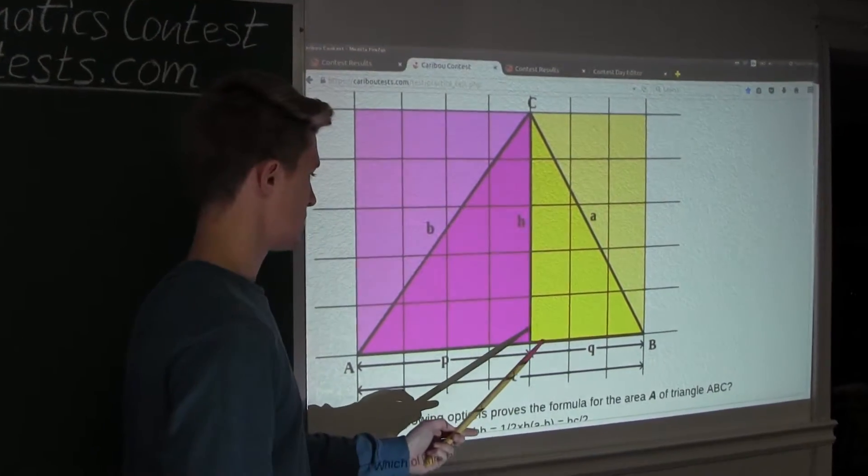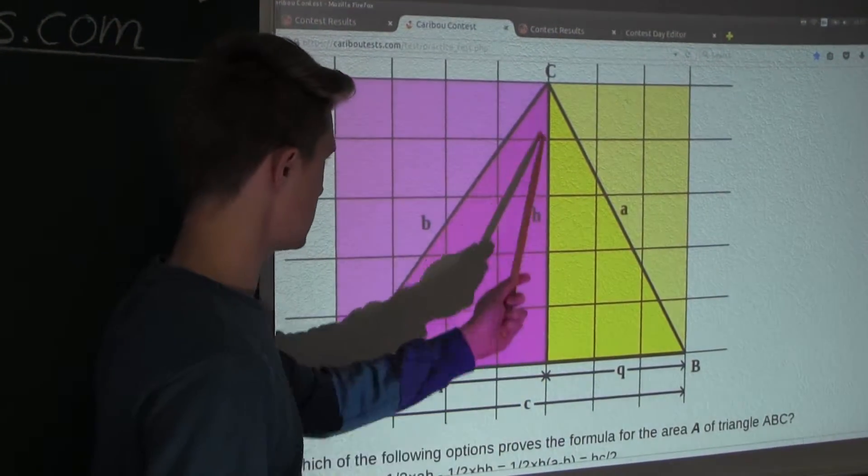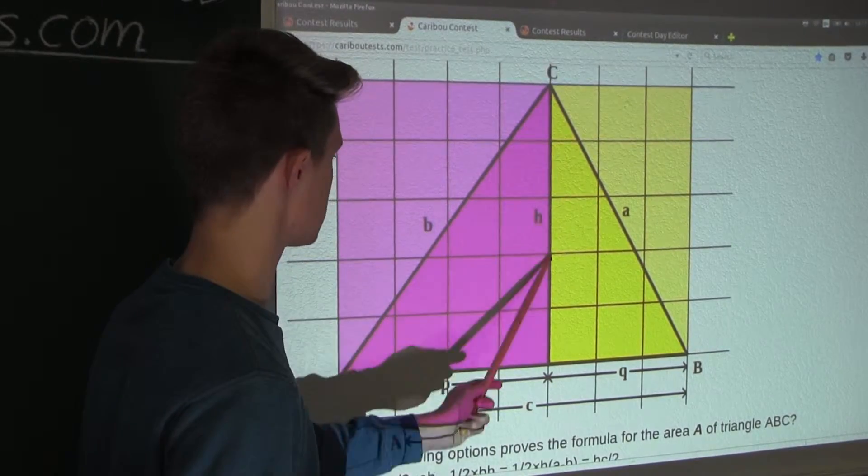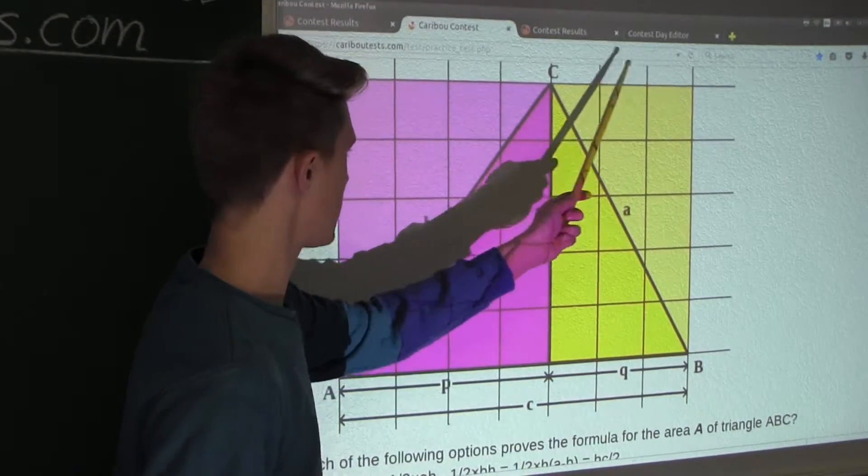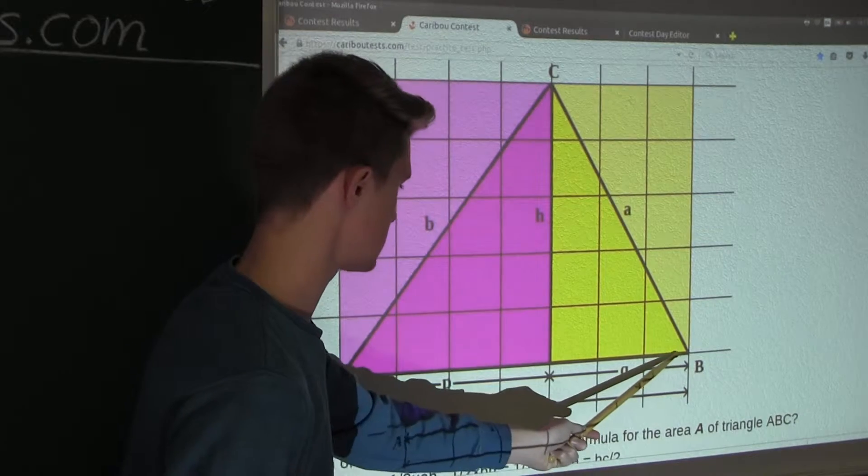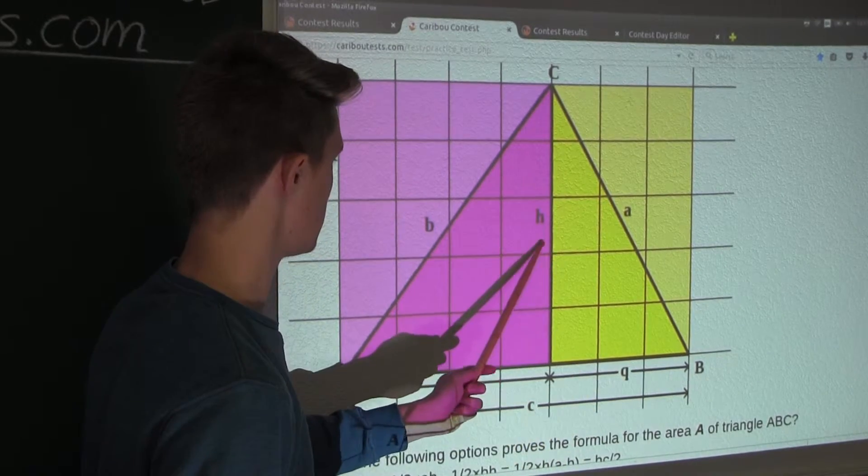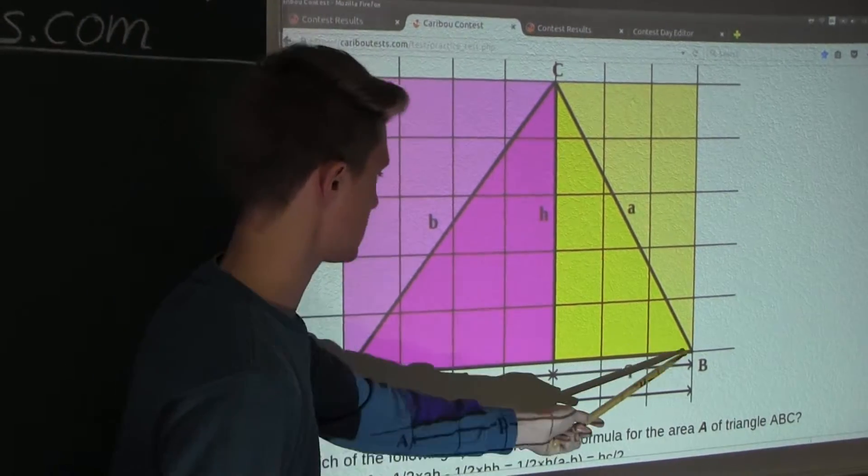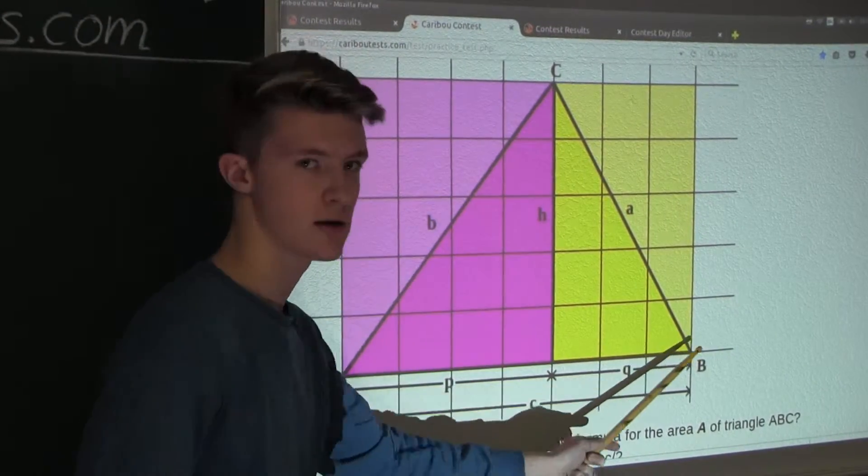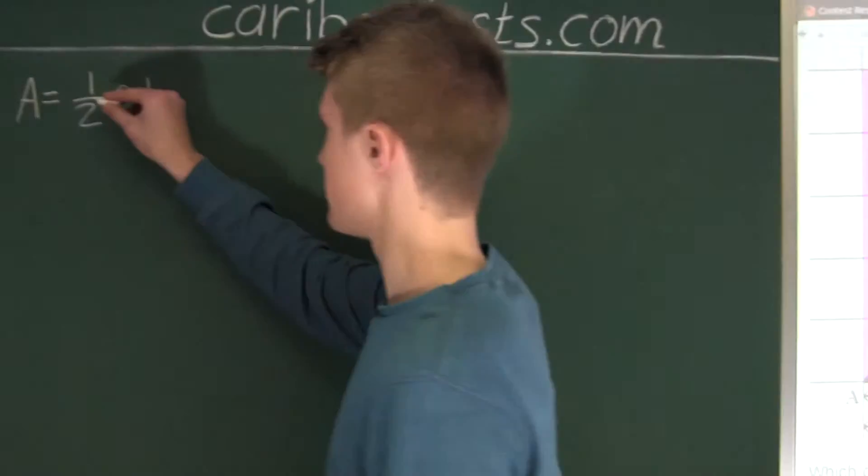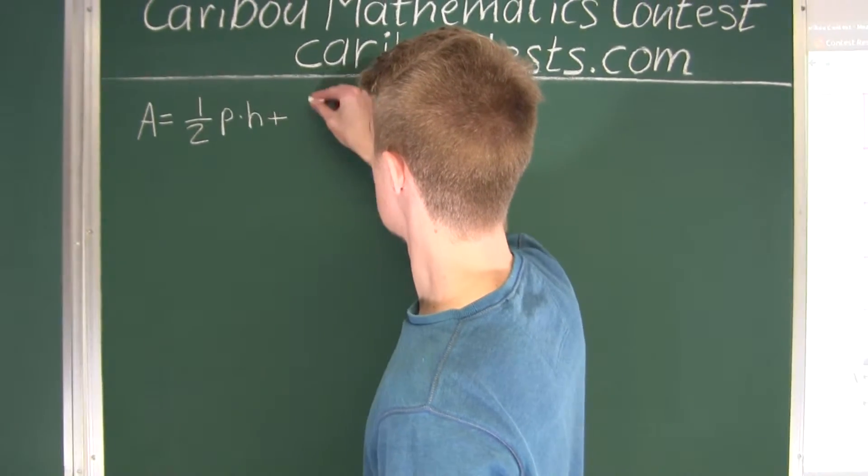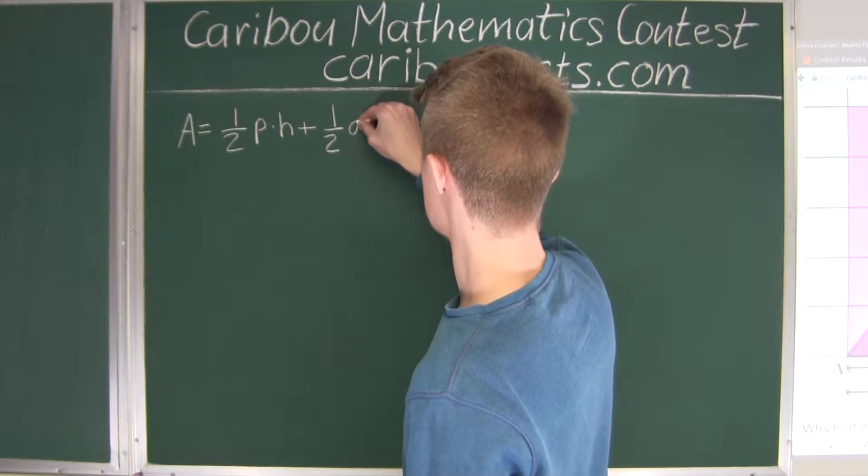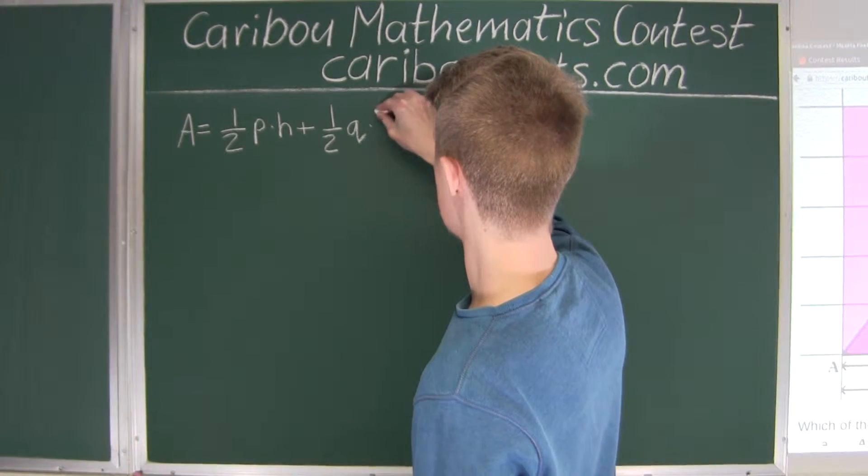And now, likewise with this yellow triangle's area, it is just the half of this rectangle's area, which is Q multiplied by H. So it would be half of Q times H, since, again, this diagonal goes from one corner to the opposite corner. So we have this plus 1 over 2 times Q multiplied by H.